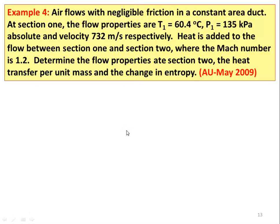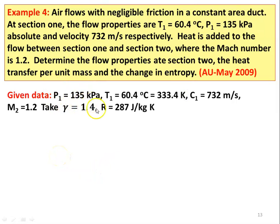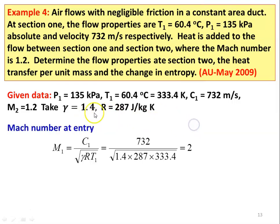Example number 4, from May 2009 question paper: Air flows with negligible friction in a constant area duct. At section 1, the flow properties are T1=60.4°C (333.4 K), P1=135 kPa, and velocity C1=732 m/s. Heat is added to the flow between sections 1 and 2, where the Mach number is 1.2. Determine the flow properties at section 2, heat transfer per unit mass, and change in entropy. Mach number at entry: M1 = 732/√(1.4×287×333.4) = 2.